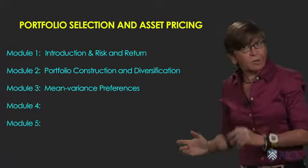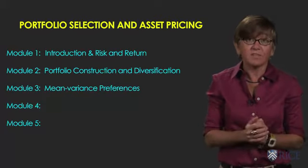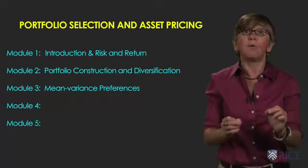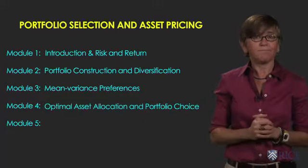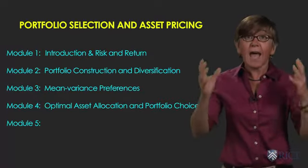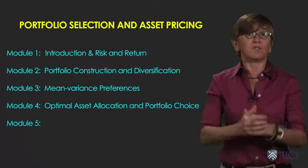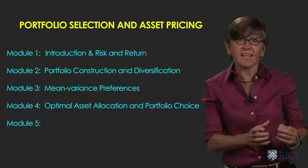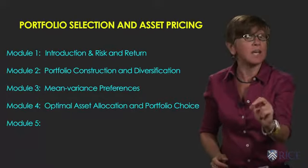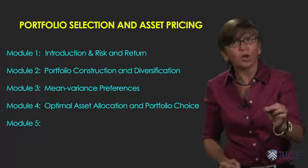In module three, we're going to turn our attention to how investors make choices. You're going to learn how to describe investors' preferences and risk aversion. Each investor is different, and this is very important in determining what the optimal investment portfolio should look like. Module four puts everything together: you will learn how to set up the asset allocation problem, how to solve it, and how to implement the optimal portfolio solution — constructing a portfolio of risky assets that gives you the maximum reward for the risk you're taking.